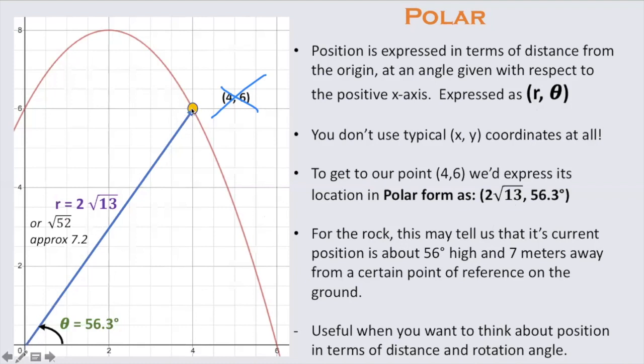To get to this yellow point, you've gone a distance of 2 root 13, which again is about 7.2, and at an angle rotated away from the x-axis of 56.3 degrees.